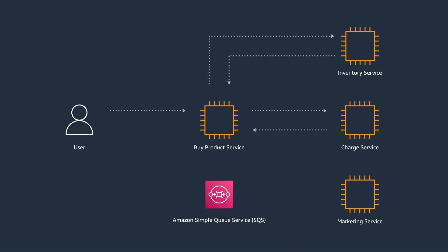How could you avoid problems like this? What about sending messages to an Amazon SQS queue to communicate with the marketing service? In that way, you decouple the services and return the control to the customer quickly. Even better, if the marketing service is down, the messages are still in the queue until the service is back and ready to pick up each of them.